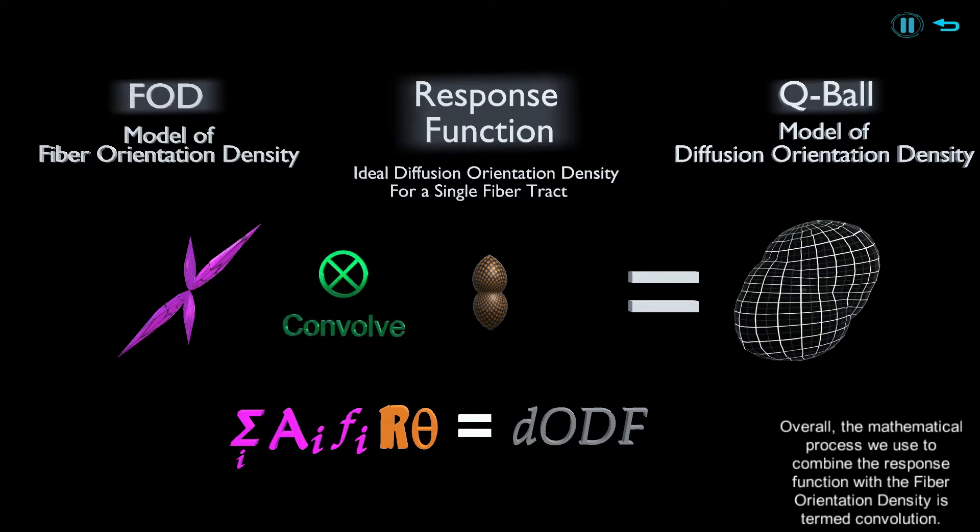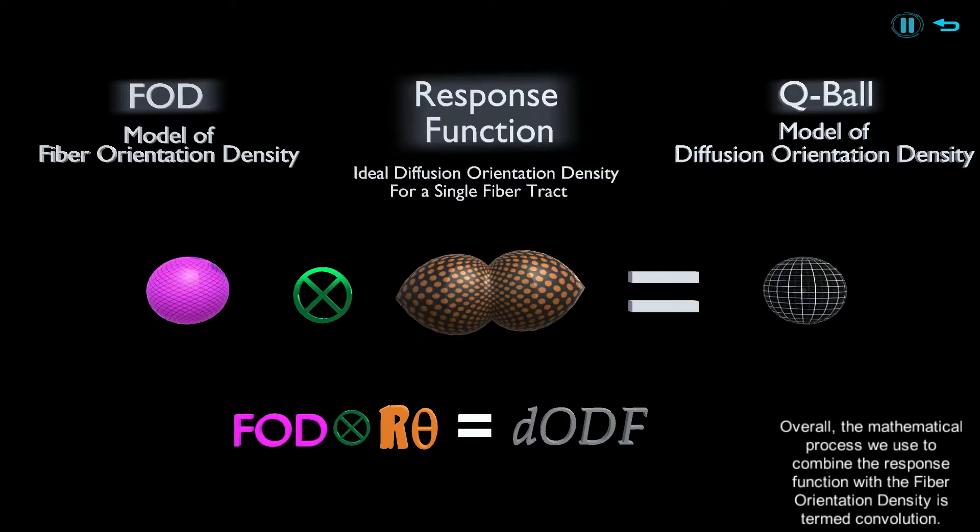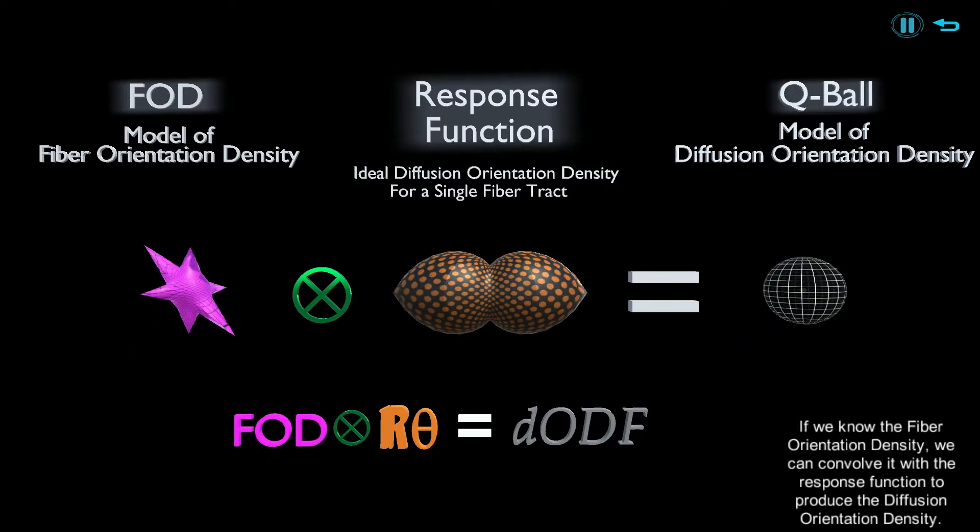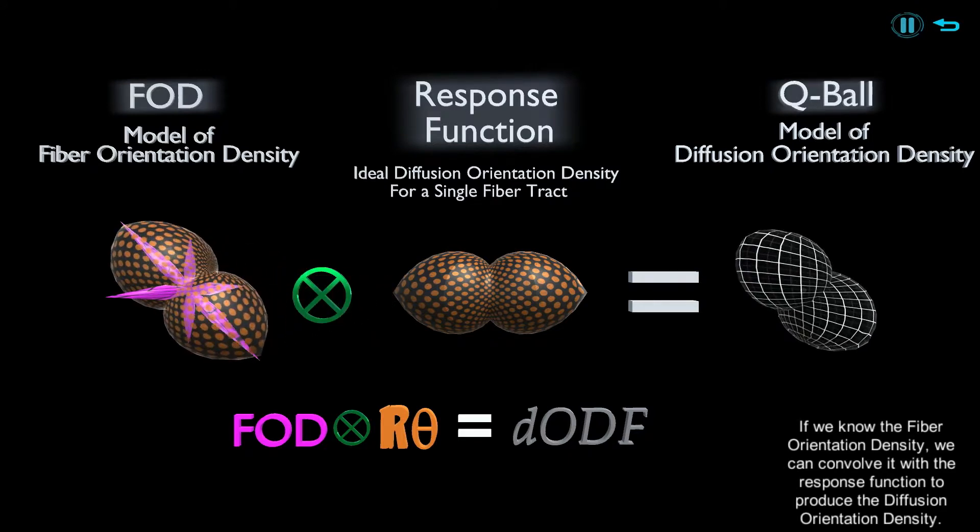the mathematical process we use to combine the response function with the fiber orientation density is termed convolution. If we know the fiber orientation density, we can convolve it with the response function to produce the diffusion orientation density.